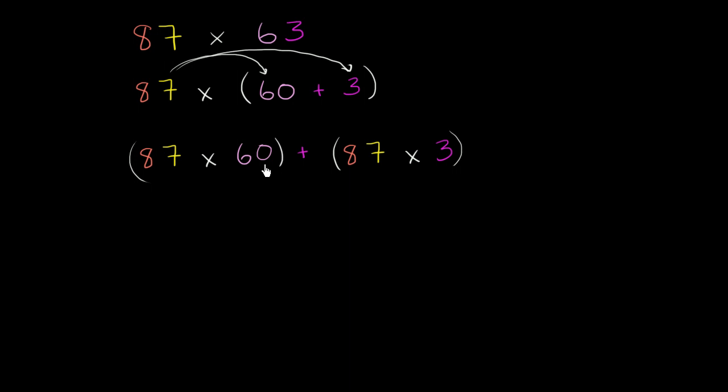But then how do you calculate what this is? Well, now we can rewrite 87 as 80 plus 7. So this is the same thing as 60 times 80 plus 7, 80 plus 7, plus 3 times 80 plus 7, or 3 times 87. Plus 3 times 80 plus 7.